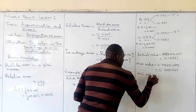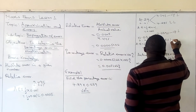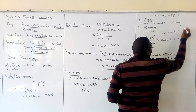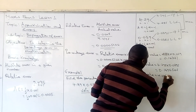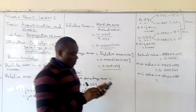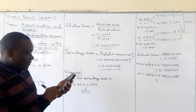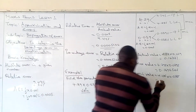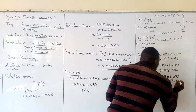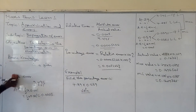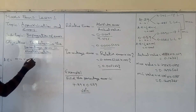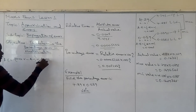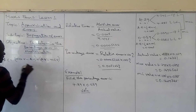For the minimum value, we take the lower limits: 4.285 × 0.0385 = 0.1649725. Now, the absolute error is given by: [(maximum value − actual value) + (actual value − minimum value)] ÷ 2.